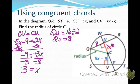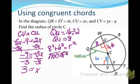So QU is 8 and CU is 6 (since 3 times 2 is 6). Now I'll use the Pythagorean theorem: 8 squared plus 6 squared equals R squared. That gives 100 equals R squared. Taking the square root of both sides, the radius is 10 units long.